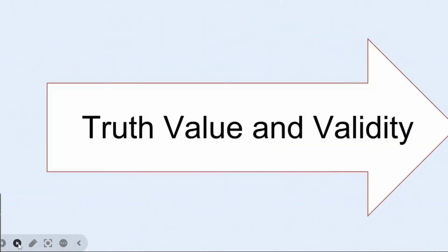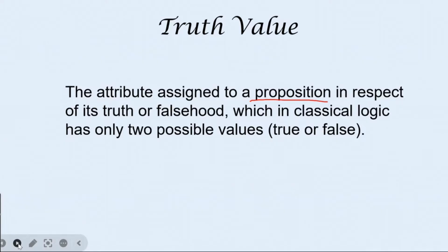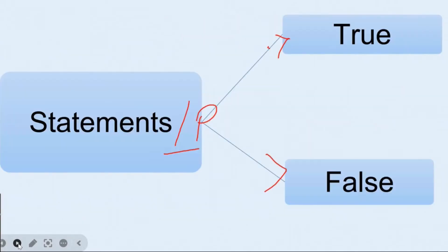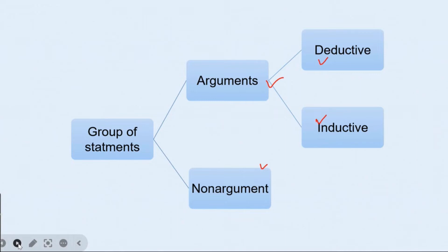Truth value is the attribute assigned to a proposition in respect of its truth or falsehood. In classical logic, it has only two possible values: true or false. For example, 'the sun rises from the east' is a proposition — it can be either true or false. All propositions can be true or false.